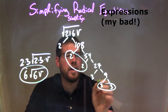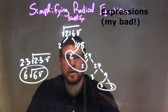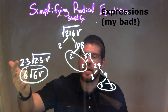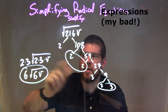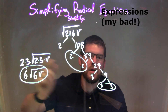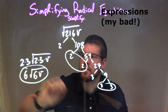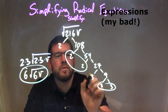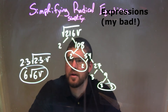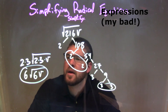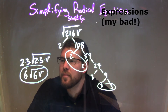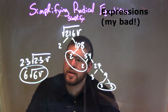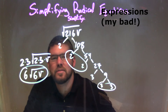I circle my pairs. I have a pair of 3s and a pair of 2s. When I circle a pair, I put one of the number on the outside for each pair — just one of the numbers on the outside. A pair of 3s becomes one 3 on the outside. Then our singles are left over — 2 and 3 — so we have square root of 2 times 3, and then V on the inside. I've now simplified it: 2 times 3 is 6, and 2 times 3 is 6, giving me my final answer of 6 square root of 6v.